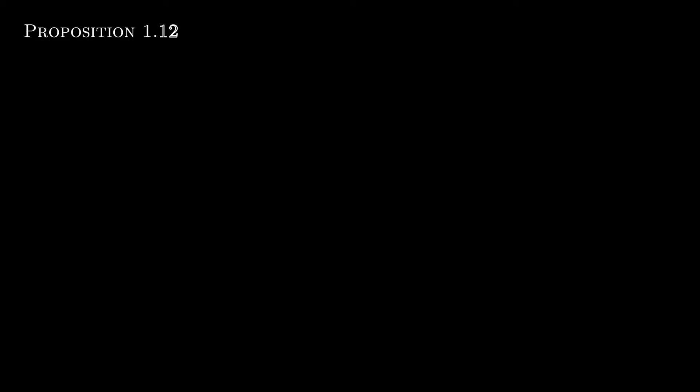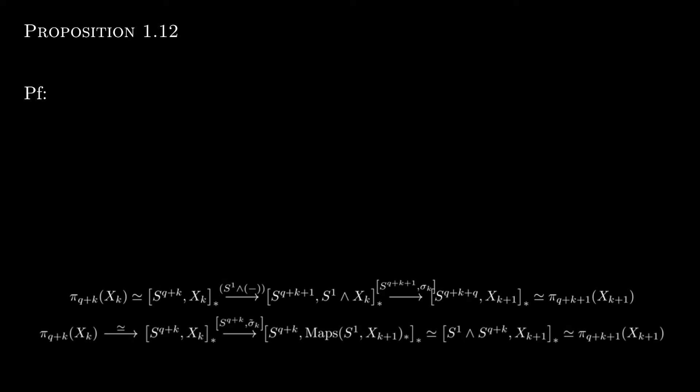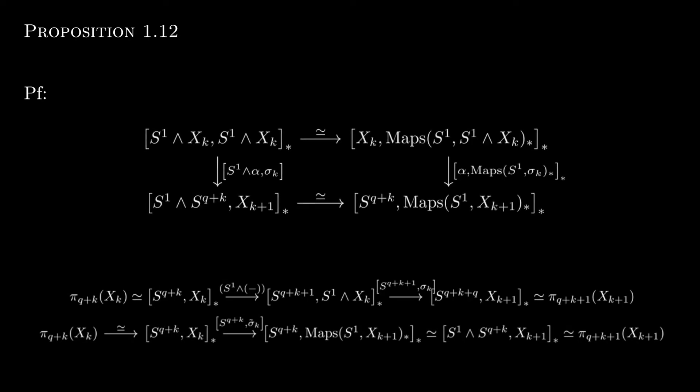As promised, let's see that the co-limits over the standard and adjunct structure maps indeed agree. Here are how the two structure maps are defined on the level of homotopy groups. We then consider the following commutative diagram, given by the standard suspension-looping smash-hom adjunction. The horizontal maps are isomorphisms by that adjunction.